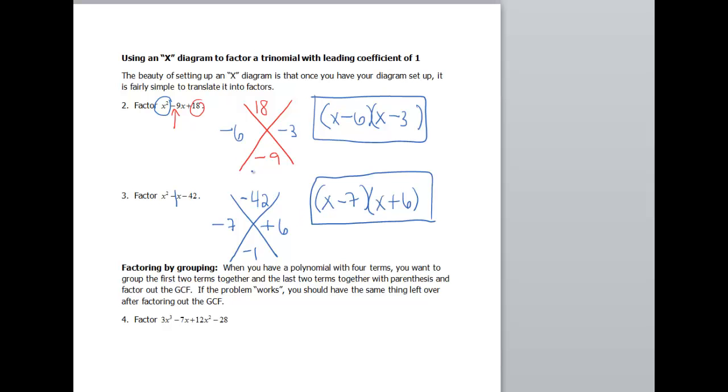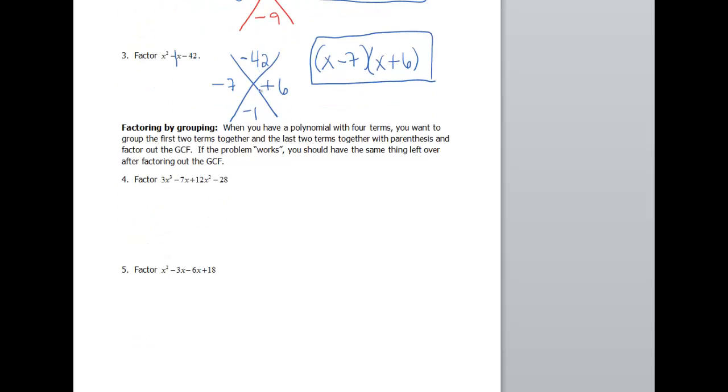Okay, so like I said, once you have your diagram set up, it's actually pretty easy to go ahead and factor. Okay, so going back to our idea of the greatest common factor and applying that to factoring by grouping, we want to group the first two terms together. So I'll do those here. And then we want to group the last two terms together. So we want to factor the GCF out of my first two terms. So I have a 3x cubed and a negative 7x. So my GCF there is going to be an x. And that's going to leave me with 3x squared minus 7.